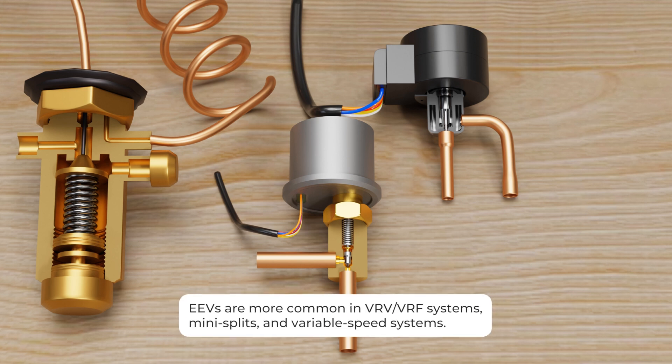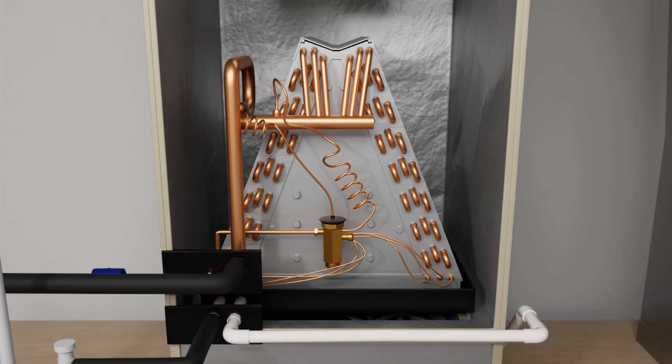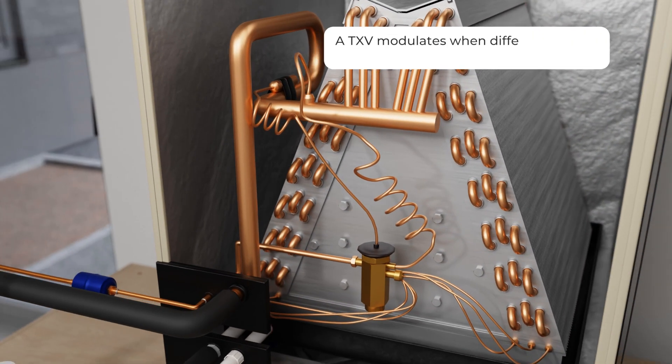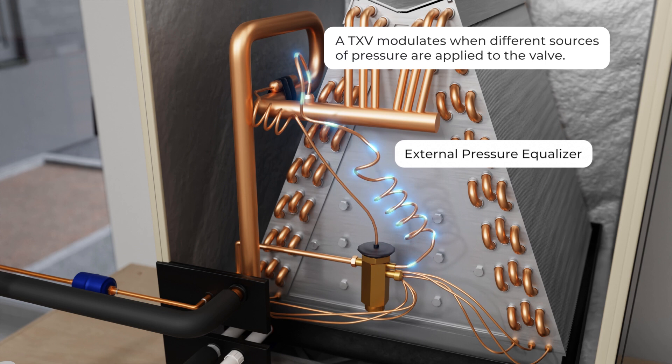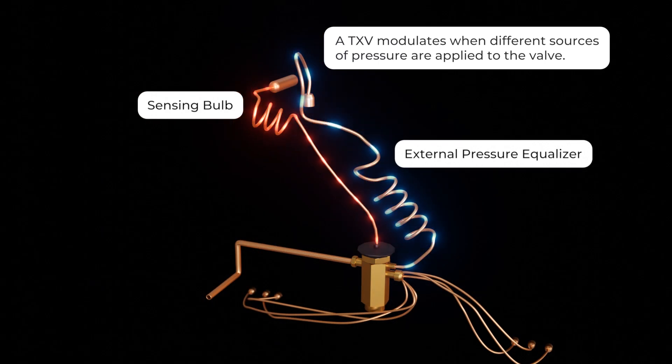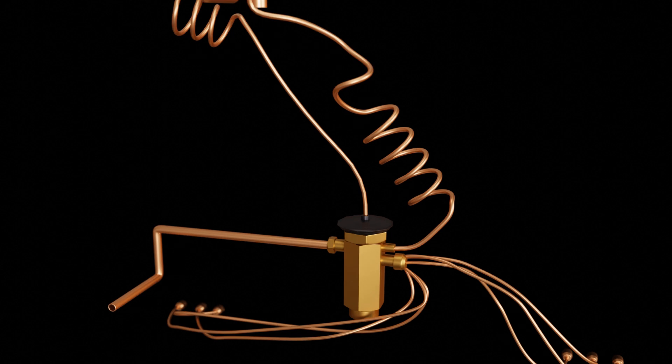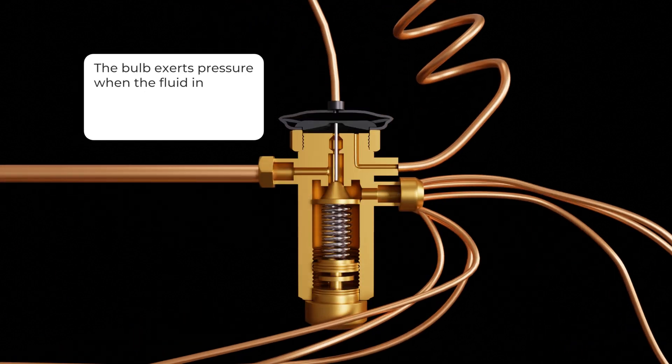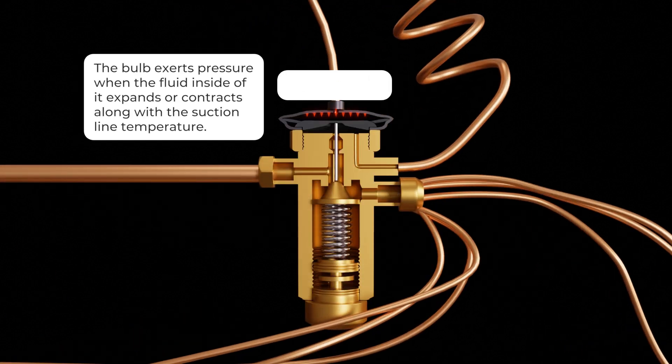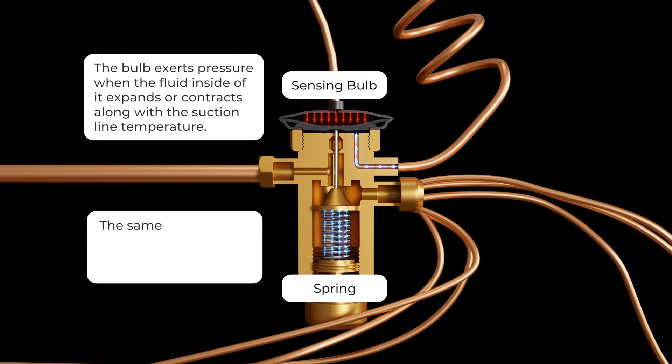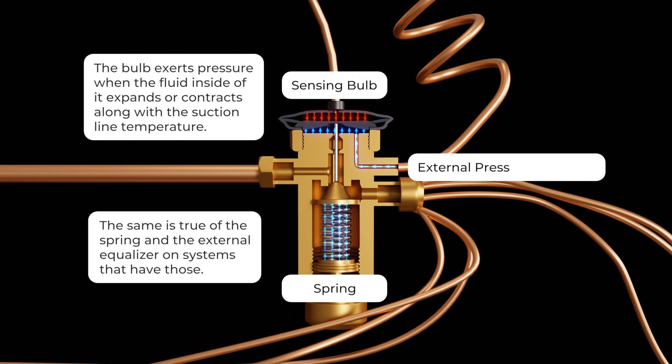They're more common in VRV or VRF systems, mini splits, and variable speed systems. A TXV is a mechanical device that modulates when different sources of pressure are applied to the valve. The bulb exerts pressure when the fluid inside of it expands or contracts along with the suction line temperature. The same is true of the spring and the external equalizer on systems that have those.